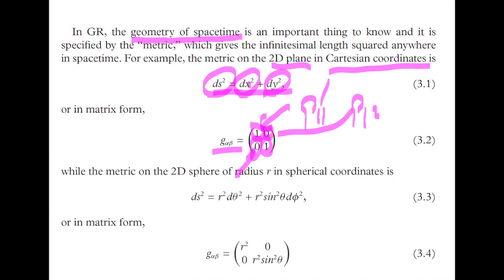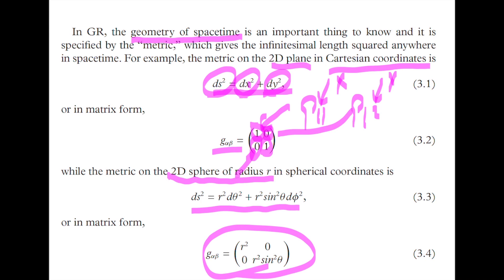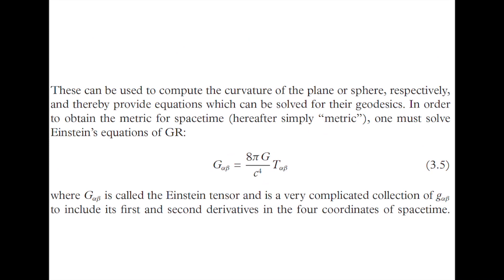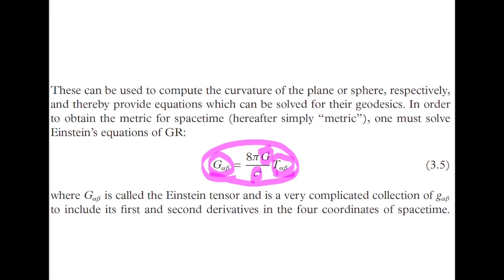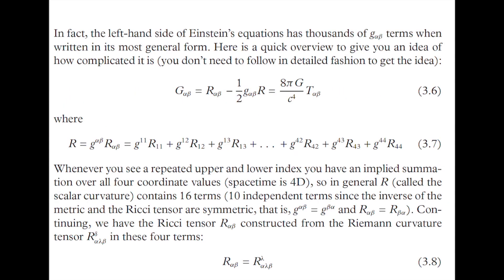Where the x-coordinate is number one and the y-coordinate is number two. The two-dimensional sphere of radius r would look like a different metric, shown in matrix form. So the goal in general relativity is to find these matrix elements, thereby giving us the geometry of spacetime. To do that, we have to solve Einstein's equations of general relativity. This involves the Newtonian gravitational constant, the speed of light, the stress-energy tensor, and the Einstein tensor. It looks like a relatively simple expression, but actually represents tens of thousands of terms if you were to write it out in general for all of your g11s and g12s.